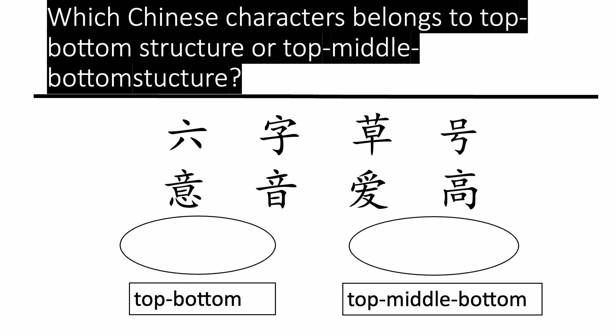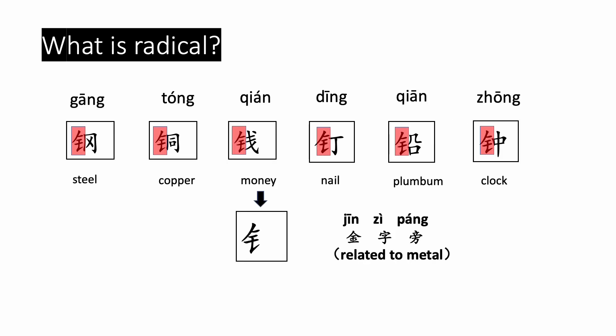Which Chinese characters belong to the top-bottom structure or top-middle-bottom structure? Next, we will learn new radicals. The first one is 金字旁. 金 means gold, so it is related to metal. Examples include: 钢 (steel), 铜 (copper), 钱 (money), 钉 (nail), 钳 (pliers), and 钟 (clock).